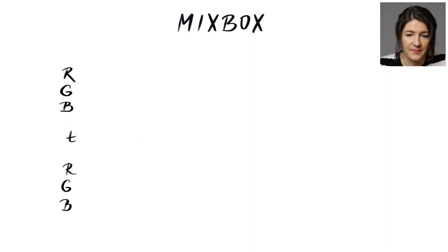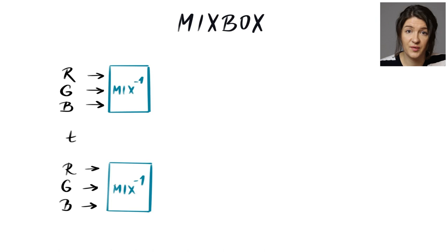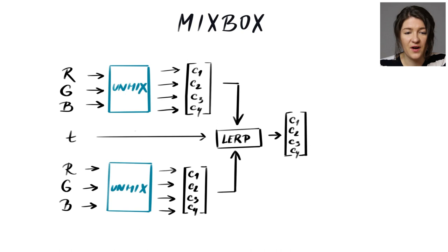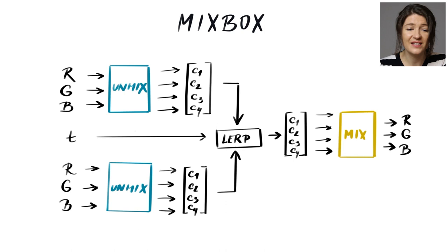Now let's have a look at the Mixbox scheme. The input consists of two RGB colors and a mixing ratio T. We take the two incoming colors and apply the inverse of the mixing function you saw on a previous slide in order to get the corresponding pigment concentrations. Now, since this is an inverse to mix, we call it the unmix. So now we have two vectors of concentrations and we make a linear interpolation of them using the mixing ratio T. As a result, we get a vector of concentrations of the final mixture. We now apply the mix function and get the RGB values of the finally naturally mixed result. This is the general idea.